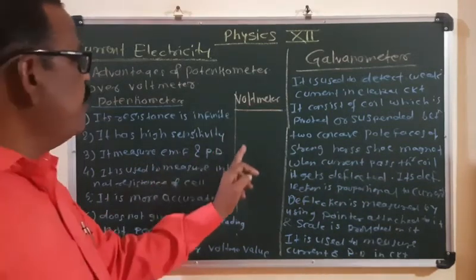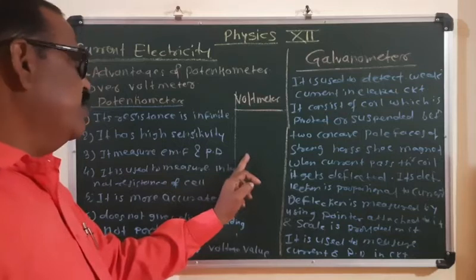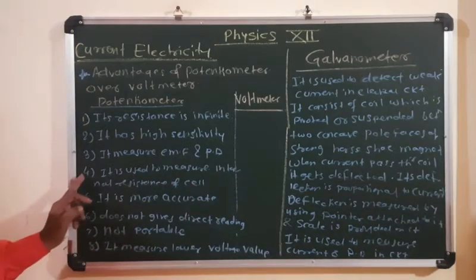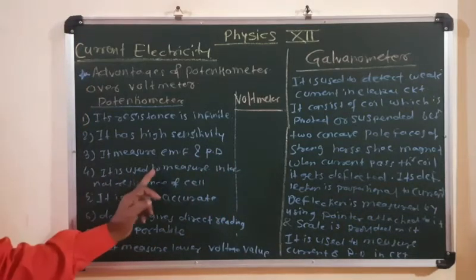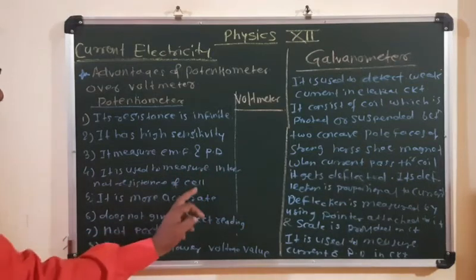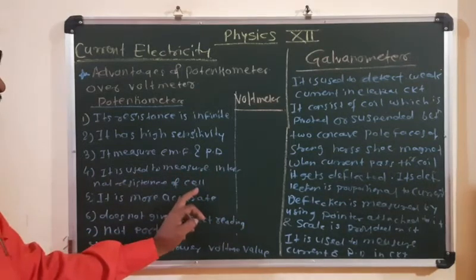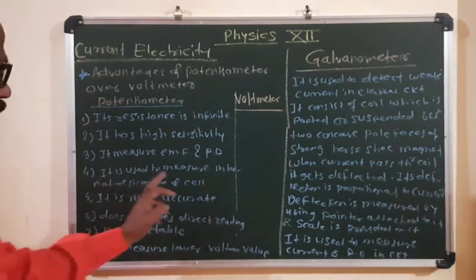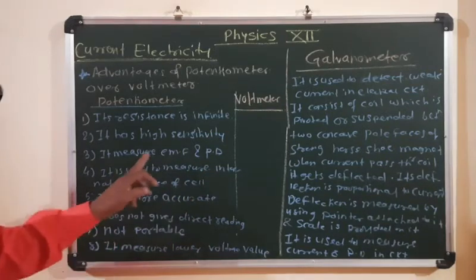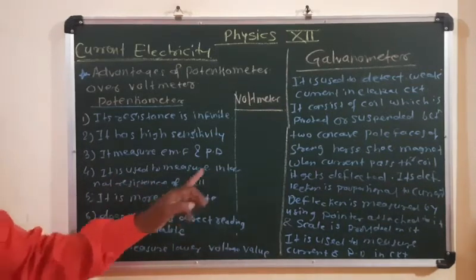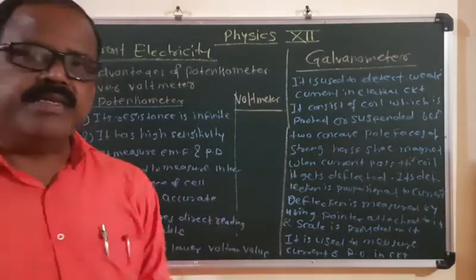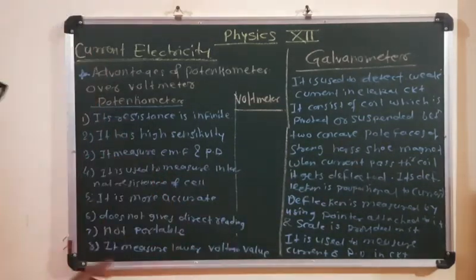The voltmeter measures potential difference only. The fourth advantage is that potentiometer is used to measure the internal resistance of a cell. The internal resistance of a cell can be measured with the help of a potentiometer, whereas a voltmeter cannot measure internal resistance.